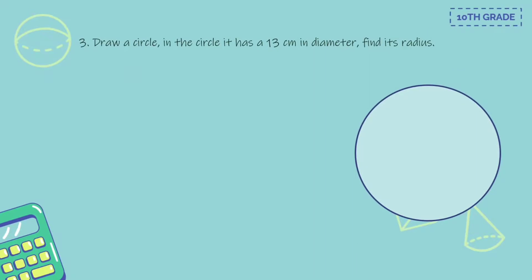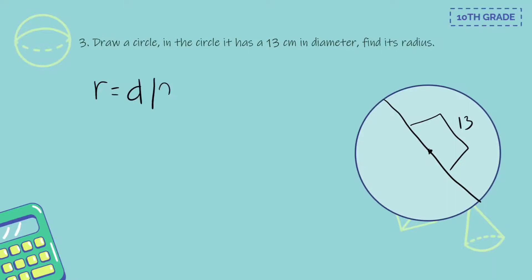Draw a circle that has a diameter of 13 cm and find its radius. Radius equals D divided by 2 — so 13 divided by 2 equals 6.5 cm.